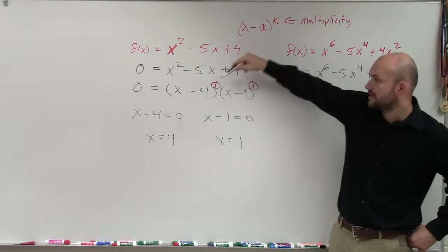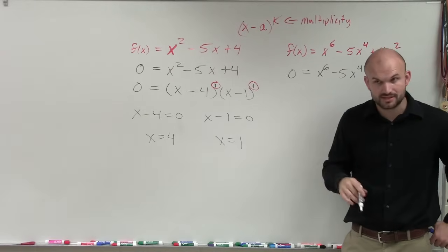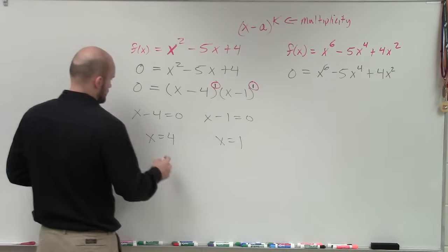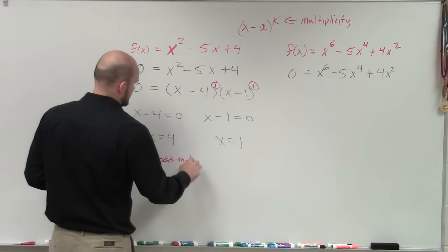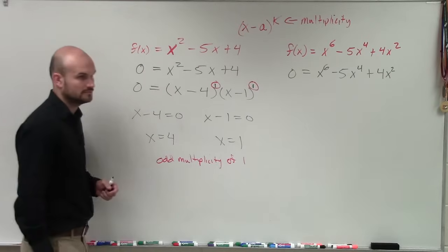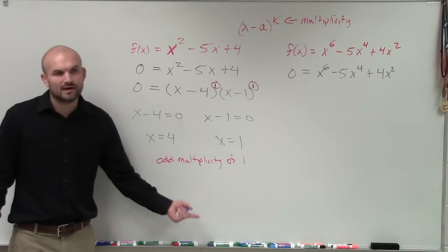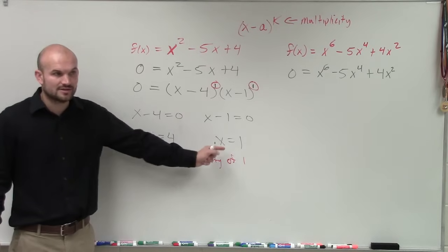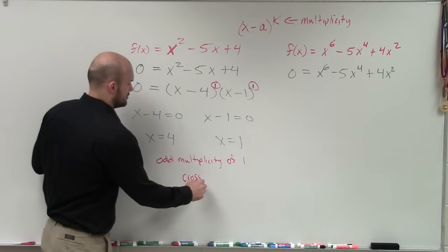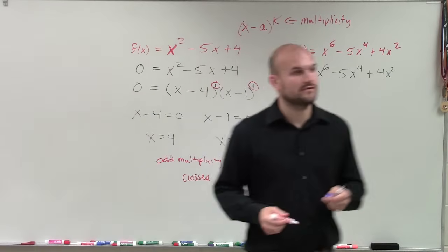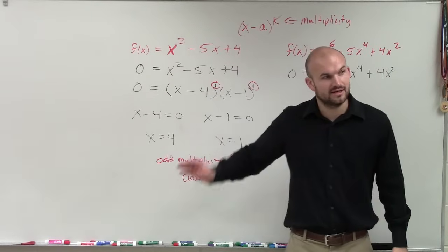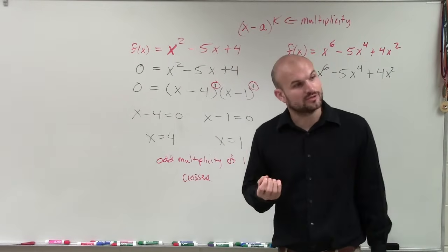So here you have this as one and one. So therefore, you have an odd multiplicity. So you can write, you have an odd multiplicity of one. And so what does that tell you about the graph? At each one of these zeros, or x-intercepts, the graph crosses. How do you know whether it crosses or touches? If it has an odd multiplicity, it crosses. If it has an even multiplicity, it touches.